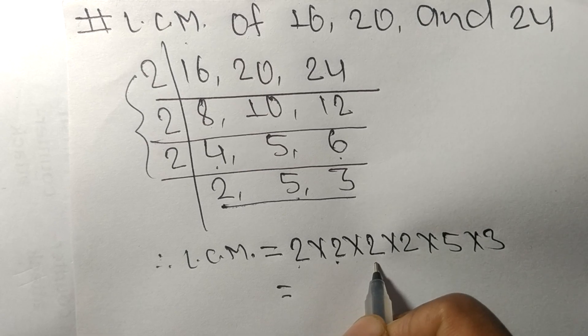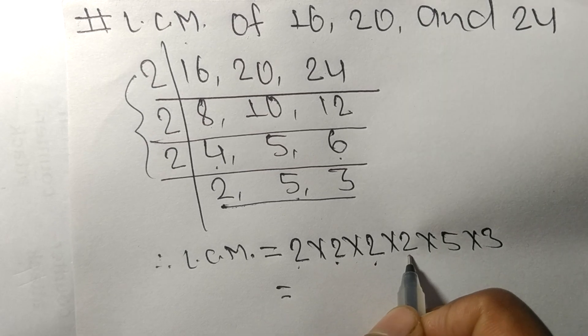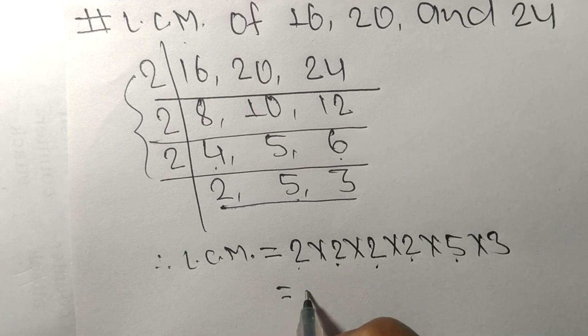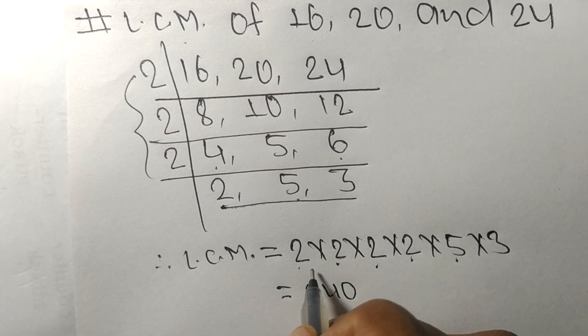16 times 5 means 80, 80 times 3 means 240.